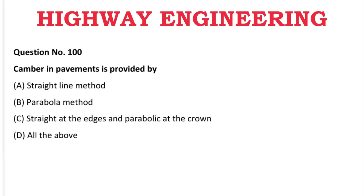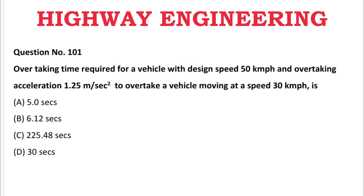Next question: Camber in pavement is provided by — A: straight line method, B: parabola method, C: straight at the edges and parabolic at the crown, D: all the above. The correct answer is D, all the above.